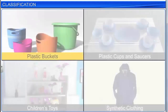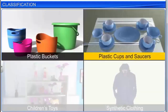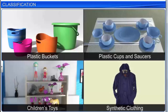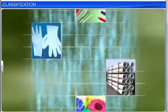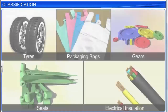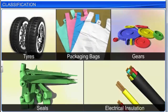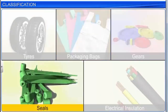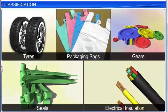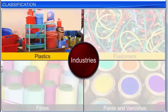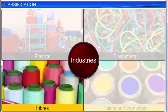Polymers are used in the manufacture of plastic buckets, plastic cups and saucers, children's toys, and synthetic clothing material. Plastics brought about remarkable changes in society and made life easier and more comfortable. Other materials made from polymers include automobile tires, packaging bags, gears, seals, and electrical insulation. Polymers are the basis for four major industries: plastics, elastomers, fibers, and paints and varnishes.